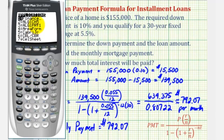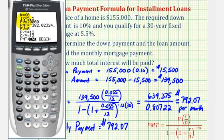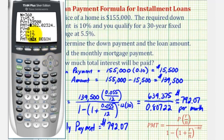So we're going to press Apps, Enter for Finance, and then Enter for TVM Solver. N is the number of payments in the loan — that would be 30 times 12, or 360. The interest rate is 5.5%. PV is the present value of the loan, which is the loan amount of 139,500. We'll come back to the payment. The future value would be 0 after the loan is paid. Payments per year is 12, and the number of compounds per year is also 12. The payments are made at the end of the month. So now we'll go back up to PMT for payment. We're going to clear this, and now we're going to press Alpha Enter for Solve. Alpha Enter verifies that our monthly payment would be $792.07, right to the nearest cent.